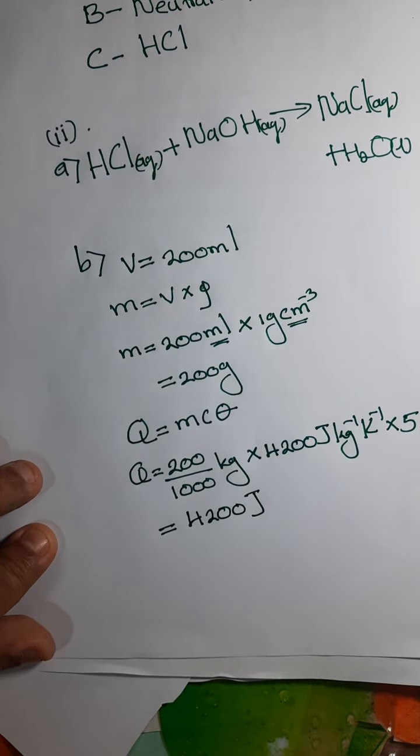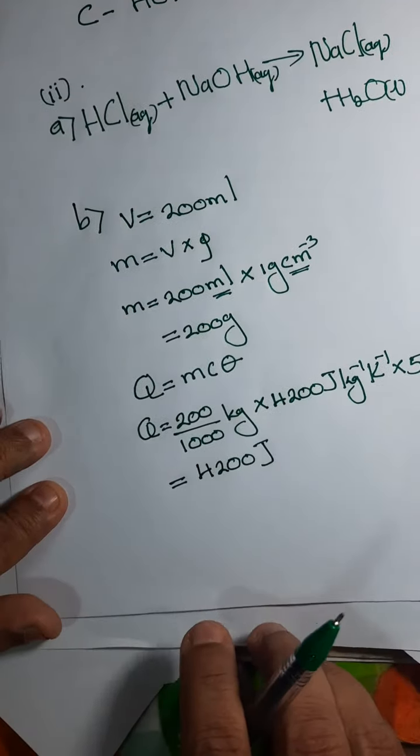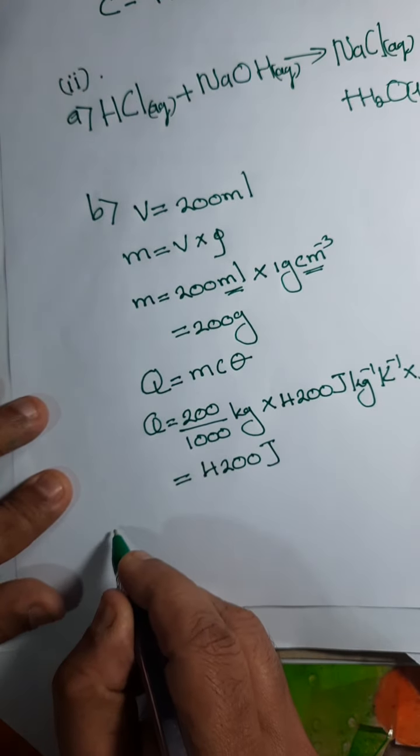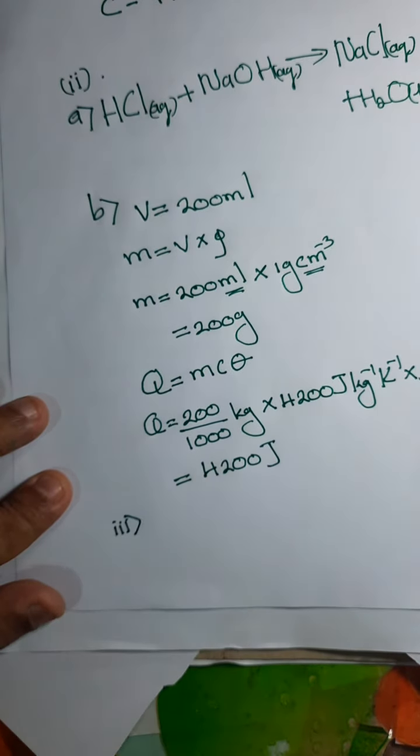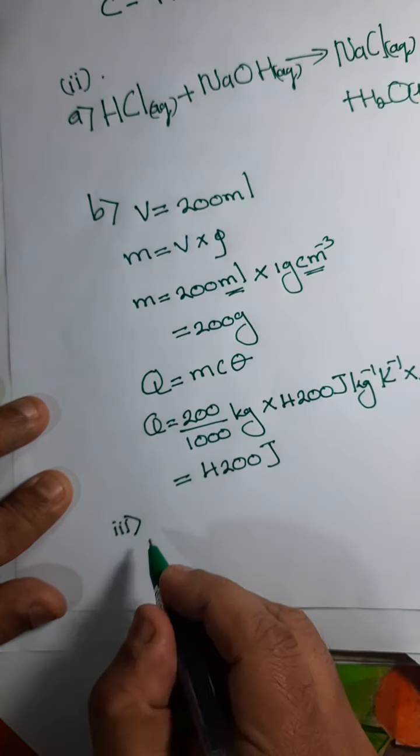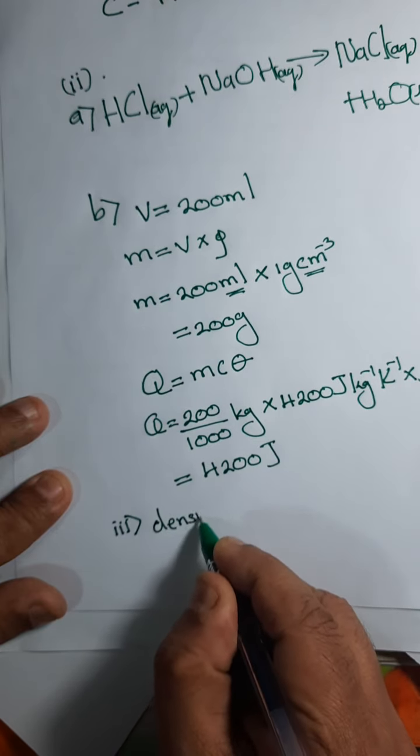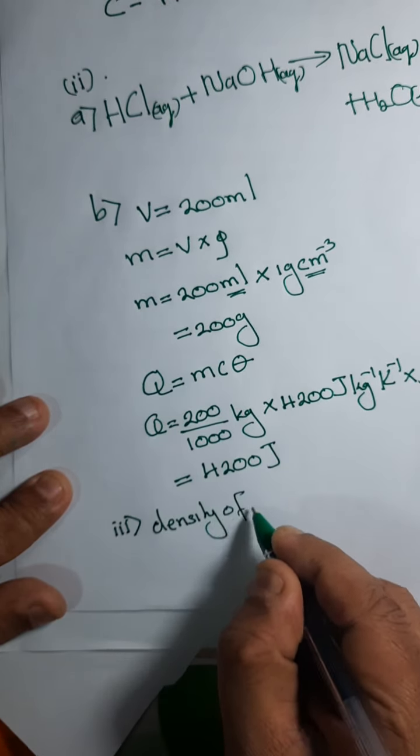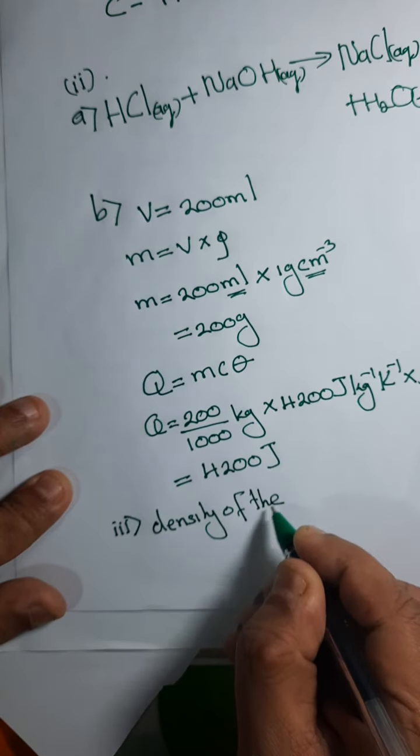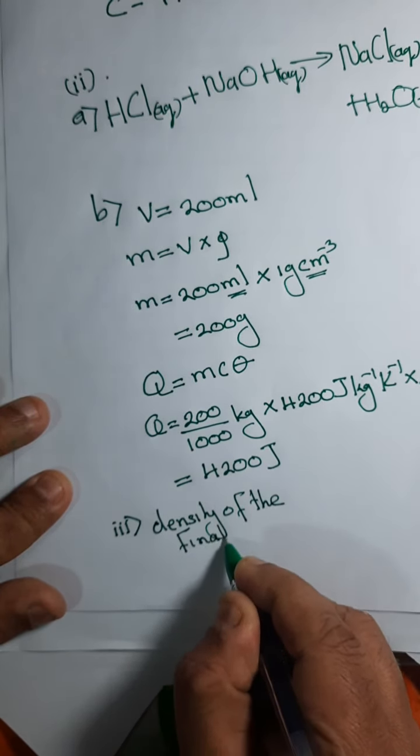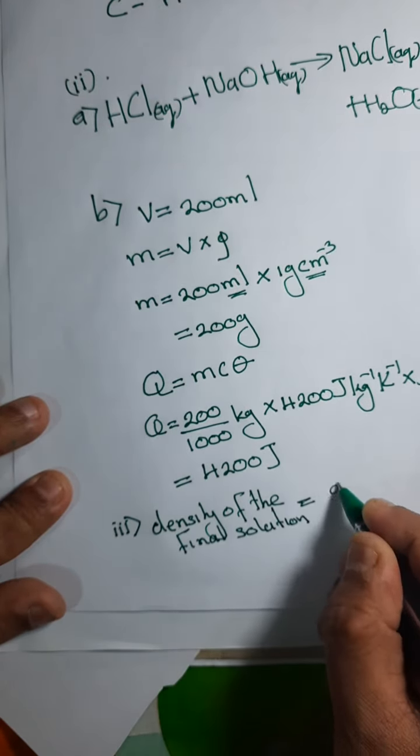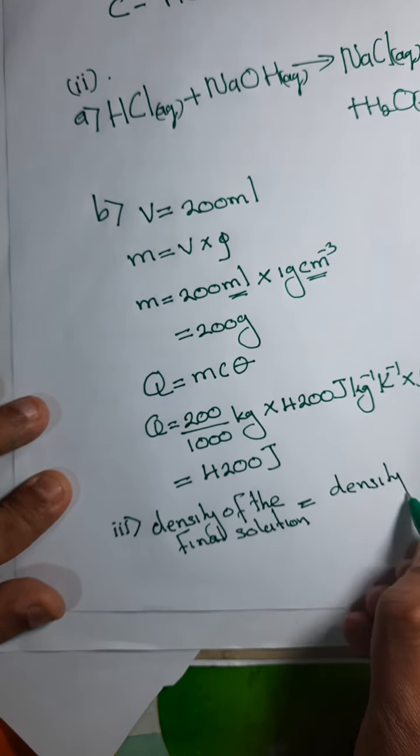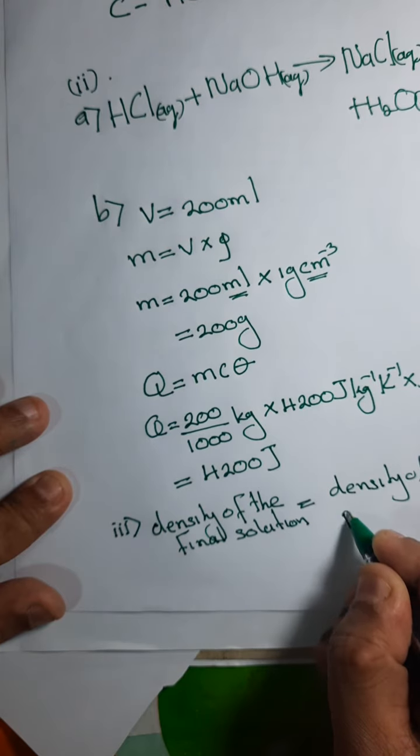Then finally, they are asking in Roman number three, the assumptions. Two assumptions. One: the density of the mixture, density of the final solution, is equalized to the density of pure water.